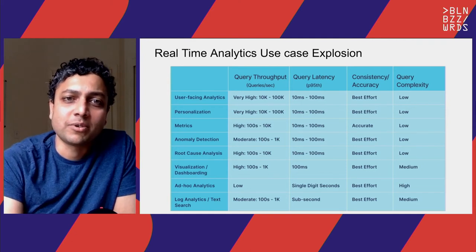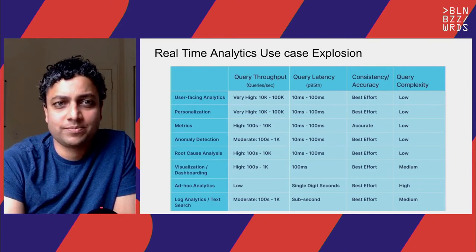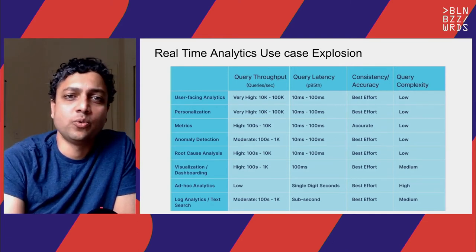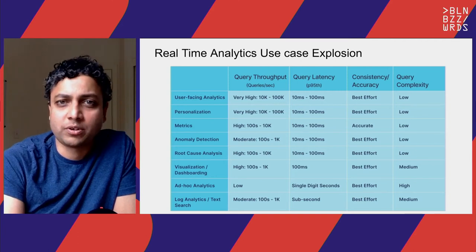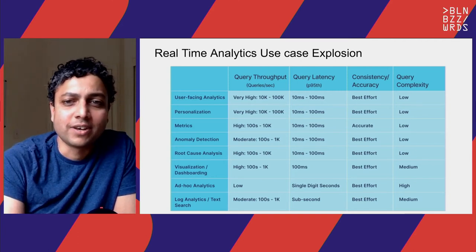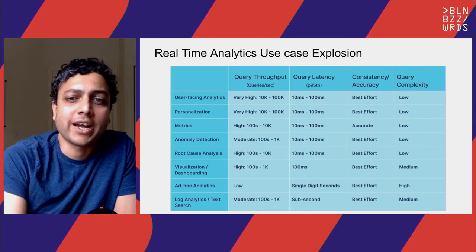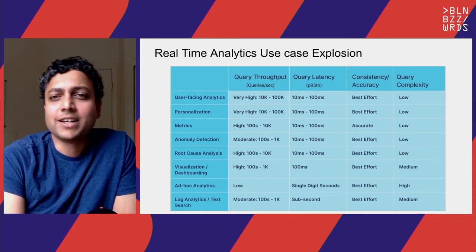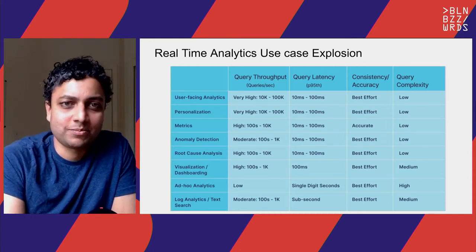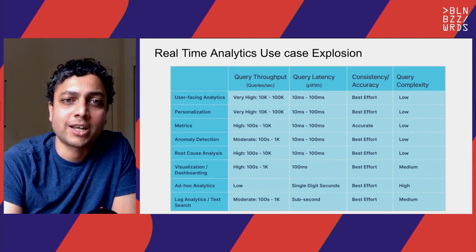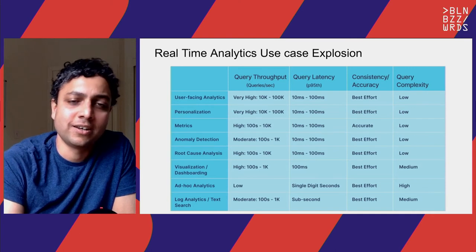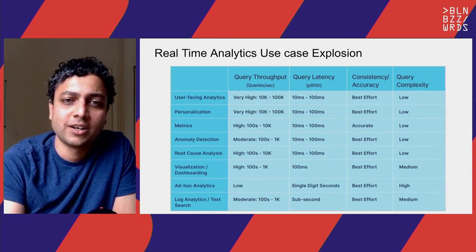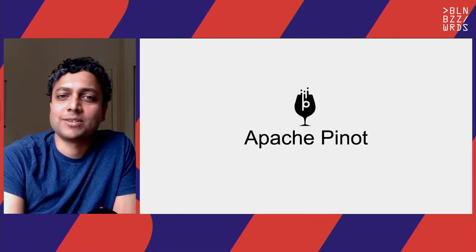The number of use cases being built on OLAP has exploded — from personalization to metrics, root cause analysis, ad hoc real-time exploration, log analytics, and so on. The requirements of each use case vary quite a bit: user-facing analytics needs extremely high throughput and extremely low latency, whereas ad hoc analytics needs very high query complexity. Ideally, we should have one OLAP system that can be tuned to support all such varied requirements — and we strongly believe that system is Apache Pinot.